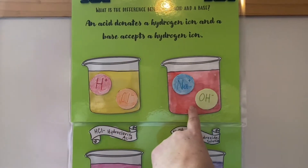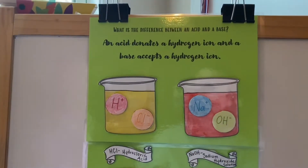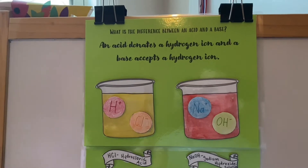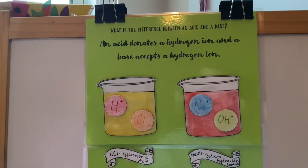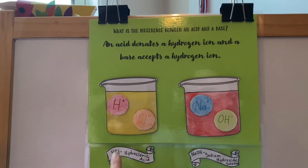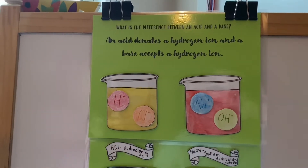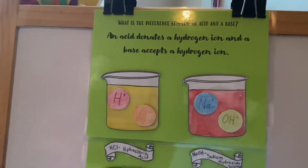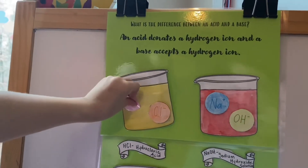NaOH is called sodium hydroxide solution. This is an acid and this is a base. So an acid donates a hydrogen ion — we're going to pick up this hydrogen ion. Hazel, can you get that hydrogen ion that we're going to donate?